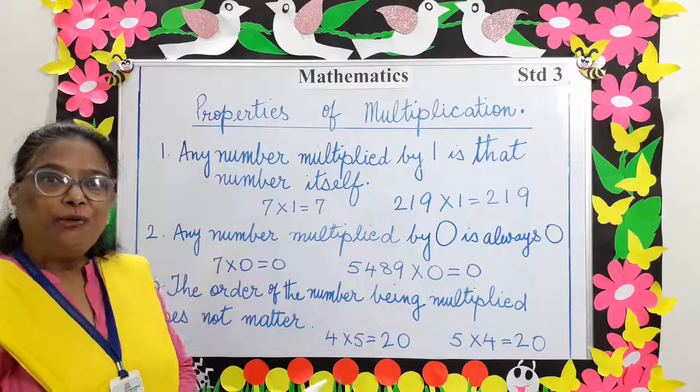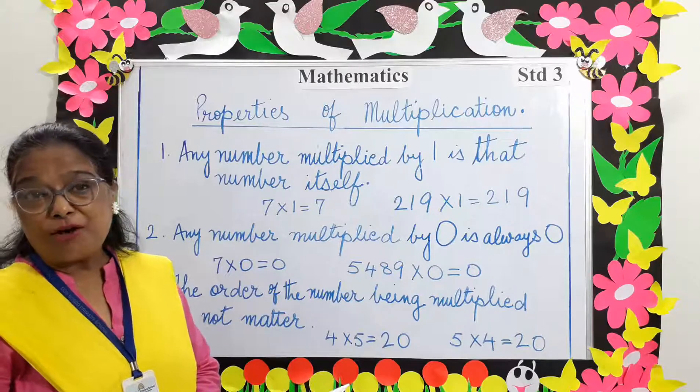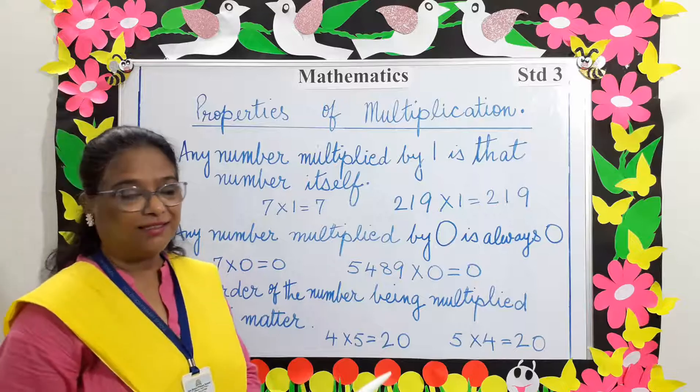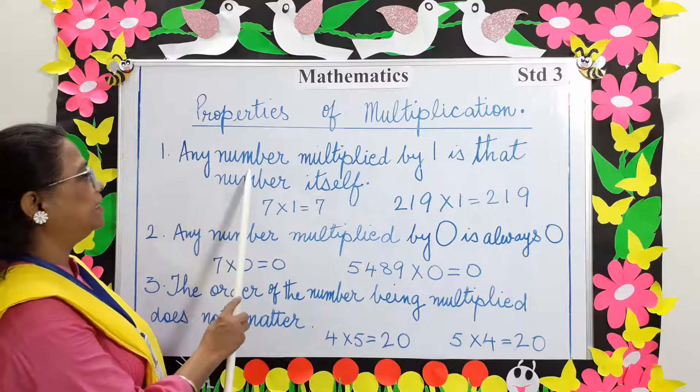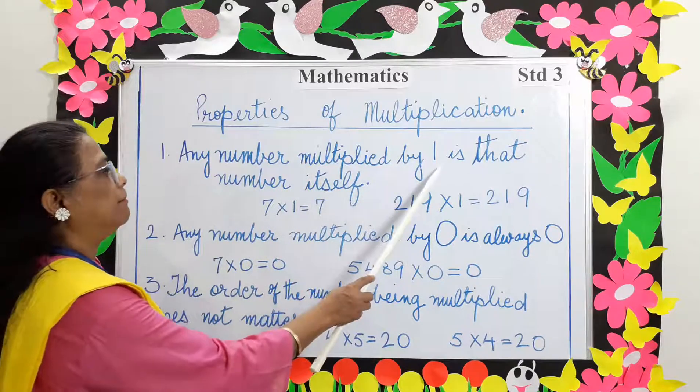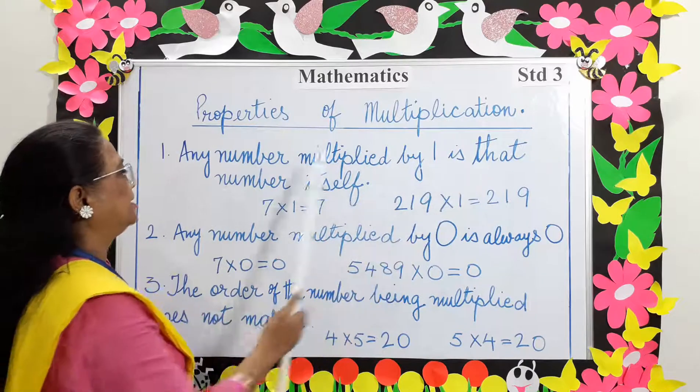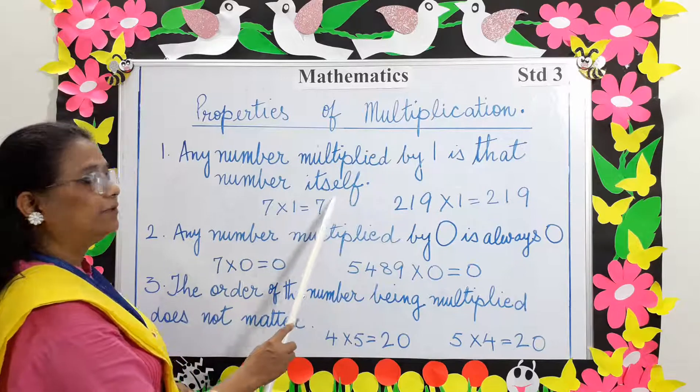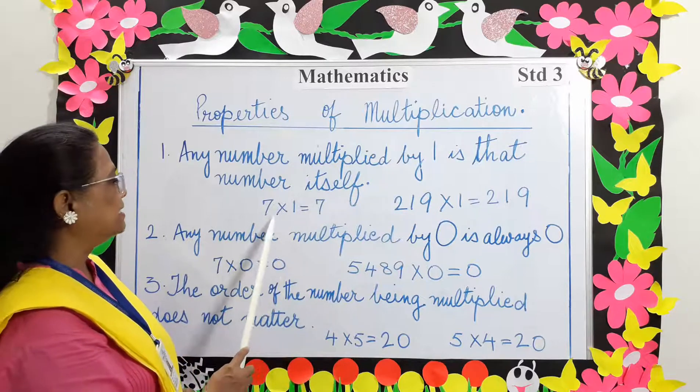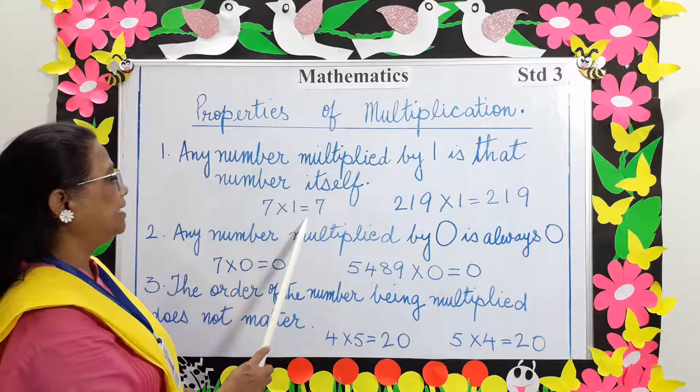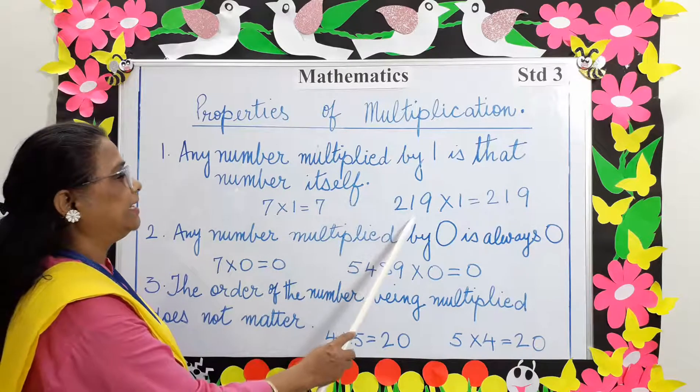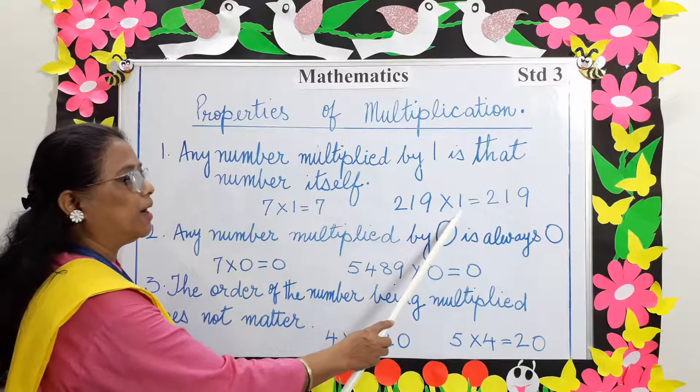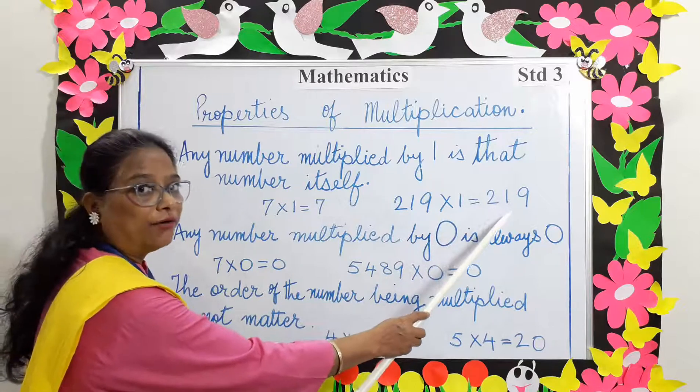Now let's look at some properties of multiplication. Property number 1: Any number multiplied by 1 is that number itself. Example: 7 multiplied by 1 equals 7. 219 multiplied by 1 equals 219.